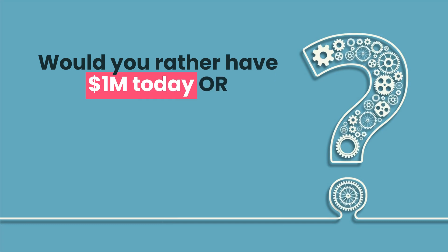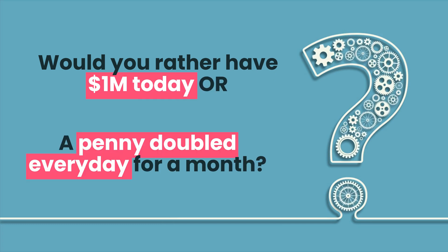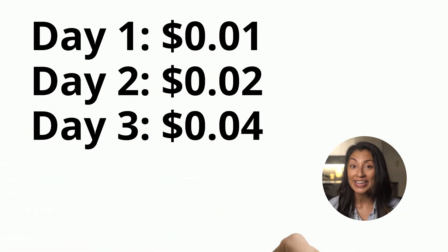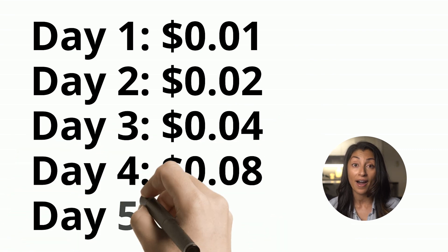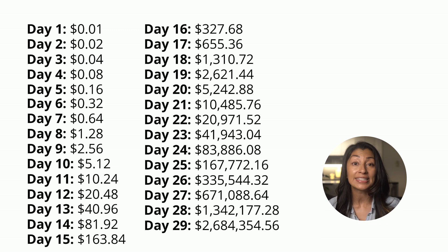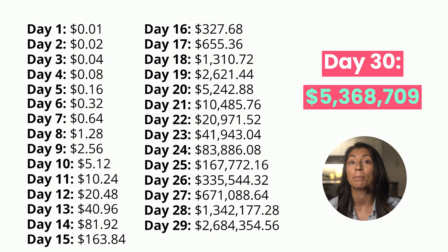Now that we understand compound interest, let me ask you a question. Would you rather have $1 million today or a penny doubled every day for a month? A million dollars outright is an insane amount of money, but let's look at what would happen if your penny doubled every day. Day 1 you'd have 1 penny, Day 2 two pennies, Day 3 four pennies, Day 4 eight pennies, Day 5 sixteen pennies. This may look like you'll end up with peanuts, but believe it or not, if you kept doing this, by day 30 you would have almost $5.4 million.